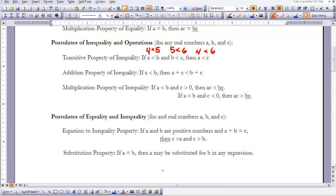Then the last section is the postulates of equality and inequality. So equation to inequality postulate: if A and B are positive numbers, and A plus B equals C, then C has to be bigger than A, and C has to be bigger than B. So what that means is that if C is the sum of both A and B, then a part of that has to be smaller than C, and the other part also has to be smaller than C, since both parts make up the whole C.